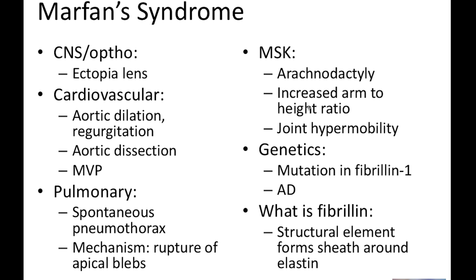From a genetic standpoint, the Marfan syndrome patient is going to typically have a mutation in fibrillin. Fibrillin is actually a scaffold for elastin. And what does elastin do? Well, elastin is important for elasticity — the ability to stretch — such that if you don't have good fibrillin, you don't have good elastin.